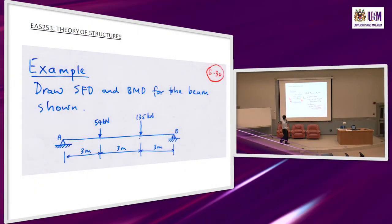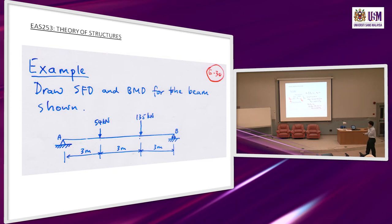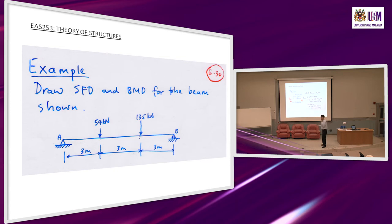The first step is to find the reaction forces at supports A and B. Use the free body diagram of the whole beam. Apply equilibrium equations: sum of forces in X gives AX; take moment at A to get BY; then use force equilibrium in Y to get AY. If you get the reaction forces wrong, the rest of the calculations will also be wrong.